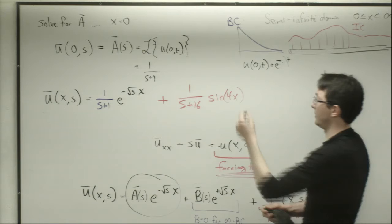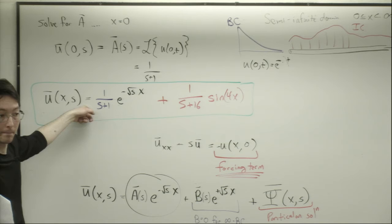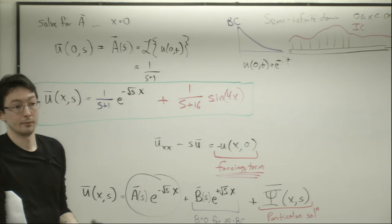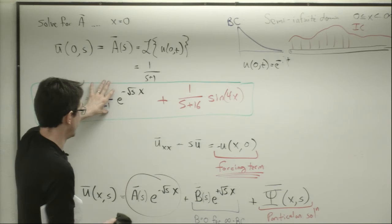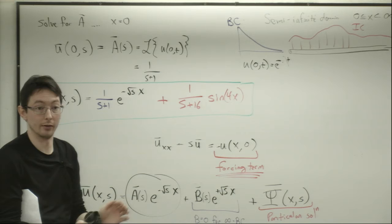Writing it all out with color coding: ū(x,s) equals [1/(s+1)]·e^(−√s · x) plus [1/(s+16)]·sin(4x). The first term comes from the boundary condition and the second is the particular solution from the initial condition. This is the solution of my PDE in the frequency domain — if you plug this in, everything balances out, and it satisfies both the initial and boundary conditions.